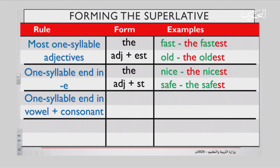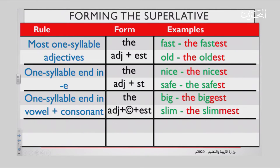A third rule: one-syllable adjectives that end in a vowel followed by a consonant. Do you remember the vowels? They are A, E, I, O, U. And the rest of the letters are consonants. So you add the adjective, double the consonant, write it again, and add EST. For example, big — B-I-G. I is a vowel and G is a consonant, so you double the G: the biggest. Slim — S-L-I-M — has an I then an M, so you say the slimmest. M is doubled.